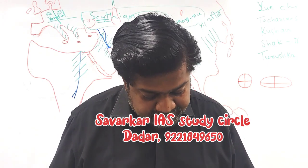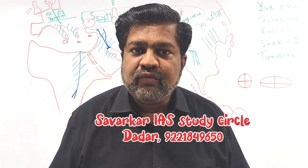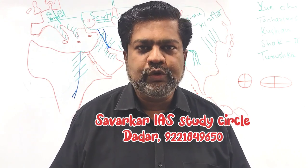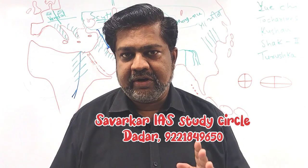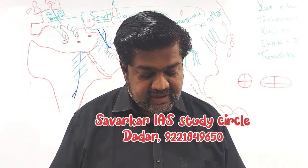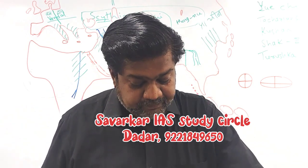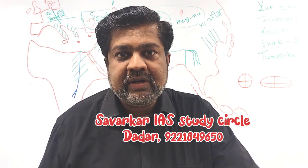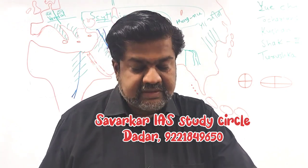Question six: the element where A equals Z (atomic mass number equals atomic number). Such an element is only hydrogen, which has one proton, one electron, and no neutron. However, hydrogen is not among the given options, so the answer is option D: none of these. Question seven: soft bone in the human body. Soft bone refers to cartilage. Vertebra is not cartilage; medulla oblongata is part of the brain, not a bone; carpals are part of the skeletal system. So the answer is none of these.